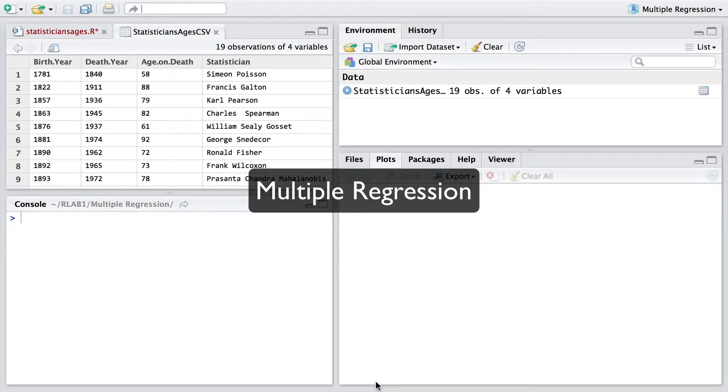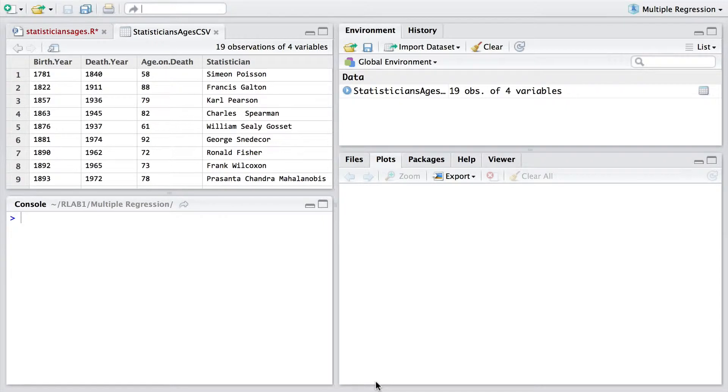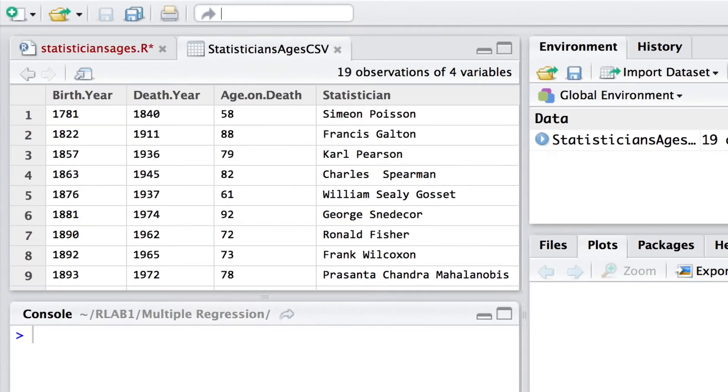Hello. In this exercise we're going to be using multiple regression techniques to understand the age of death of a number of 19th and 20th century statisticians.